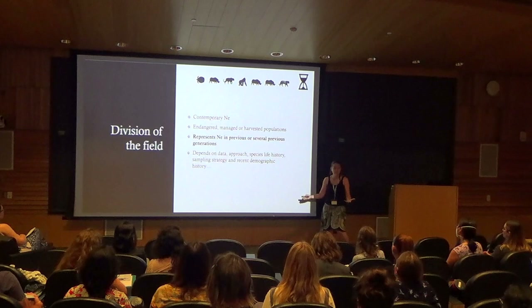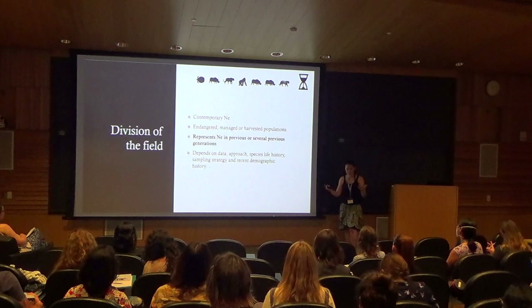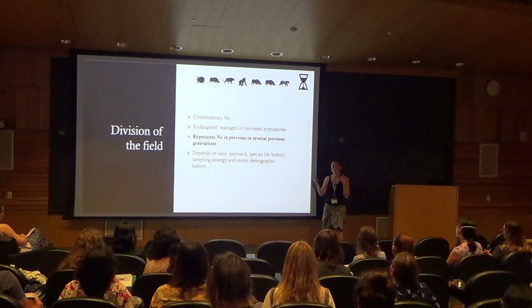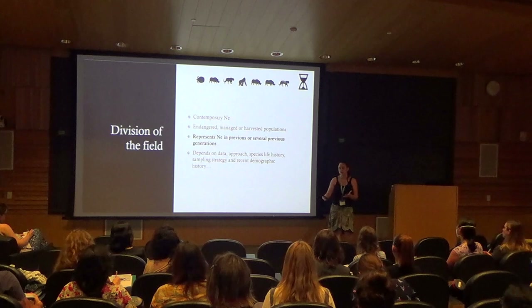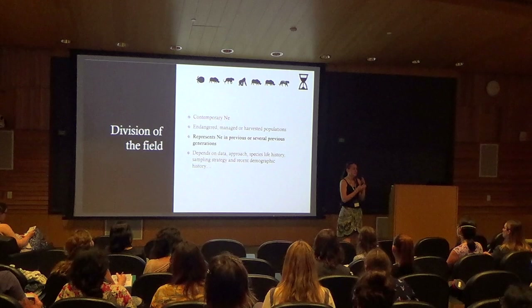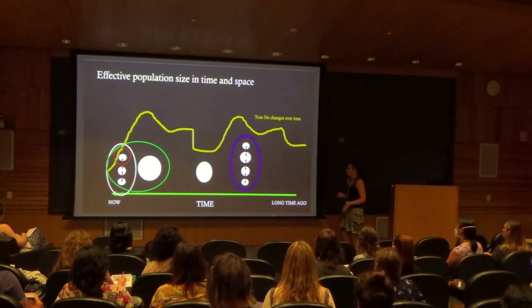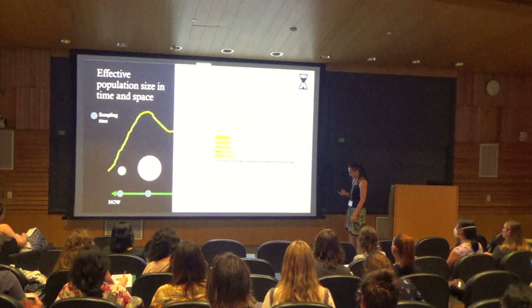We have the contemporary Ne, which is very important for small populations — endangered, managed, and harvested. If you talk about the time frame of contemporary Ne, it represents either the previous generation or several generations back in time, and it very much depends on your data, approach, species life history, sampling strategy, and recent demographic history.